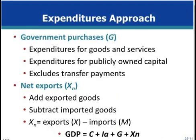The last two components of the expenditures approach are government purchases and net exports. Government purchases are officially labeled government consumption expenditures and gross investment. It includes expenditures for goods and services that the government uses in providing public services, and expenditures for publicly owned capital, such as for schools or roads. It excludes government transfer payments, such as Social Security, because it merely transfers government receipts to certain households and does not generate any sort of production.